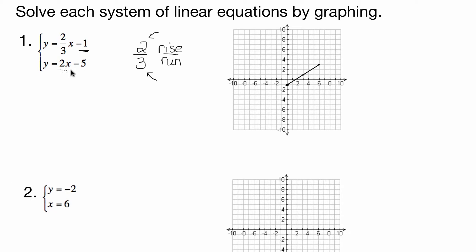Again, start at the y-intercept, which is negative 5 — so all the way down here. And the slope is 2 over 1, which means we rise 2 and run 1. So let's go up 2, run 1. Up 2, run 1. Right there.